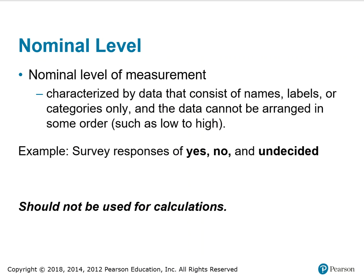Nominal level of measurement is characterized by data that consists of names, labels, or categories only, and the data cannot be arranged in any order such as low to high. An example would be survey responses of yes, no, and undecided. These should not be used for calculations.